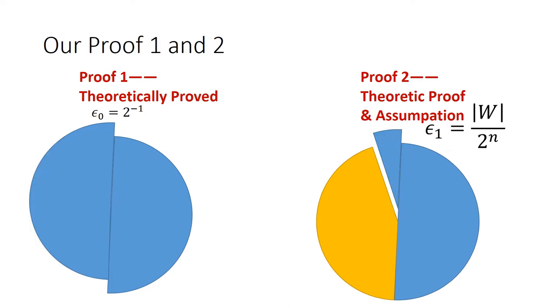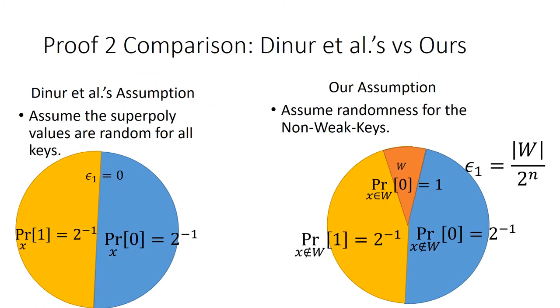In our dynamic cube attack, we are able to theoretically prove the largest possible epsilon 0 in proof 1. In proof 2, we are able to find a deterministic weak key class W such that the superpoly values corresponding to the weak keys are all 0. Our assumption is that the non-weak keys have random superpoly values, so the bias epsilon 1 can be computed directly with the key space size. In other words, our attack moves a tiny step forward than Dinur's in proof 2. Dinur et al. directly assumed superpoly values are random for all keys while we assume randomness for the non-weak keys.